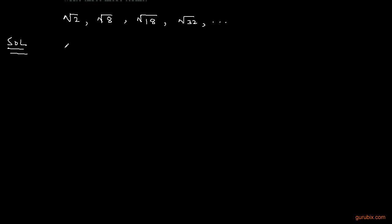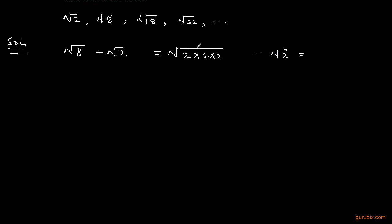To check whether this is an AP, we subtract the first term from the second term. The second term is √8 and the first term is √2. We can write 8 as 2×2×2, so √8 = 2√2. Subtracting √2 from 2√2 gives us √2.